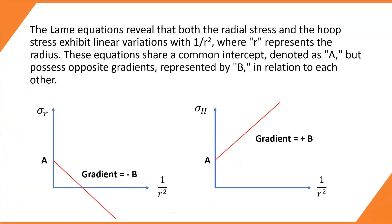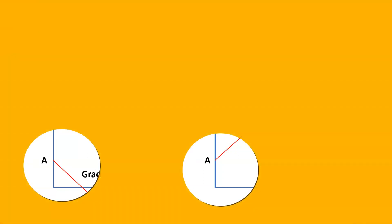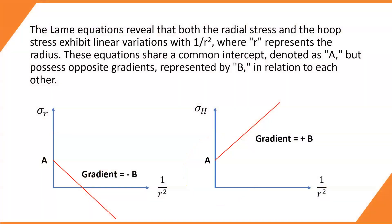The Lame equations reveal that both the radial stress and the hoop stress exhibit linear variations with 1/R², where R represents the radius. These equations share a common intercept, denoted as A, but possess opposite gradients, represented by B, in relation to each other.